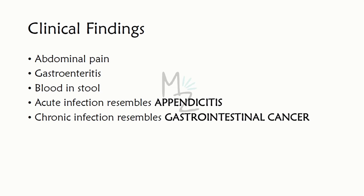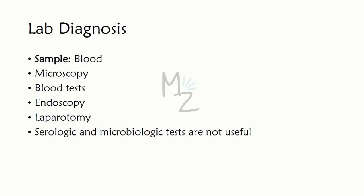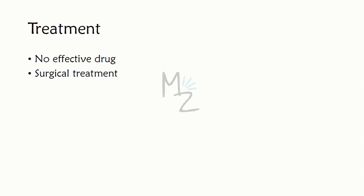Epidemiology: most US cases have been traced to eating sushi or sashimi, especially salmon and red snapper in Japanese restaurants. Lab diagnosis requires blood and stool samples; diagnosis is typically made endoscopically or on laparotomy. Serologic and microbiologic tests are not helpful. Treatment: there is no effective drug; surgical removal may be necessary.